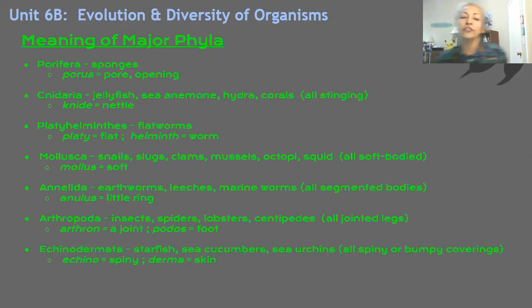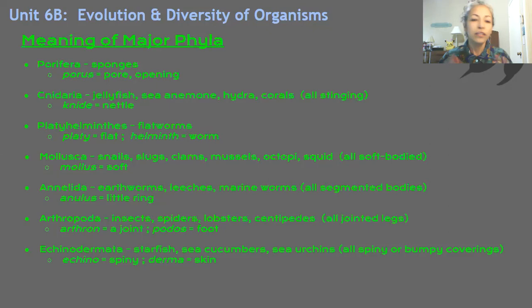How about Echinodermata? These are starfish, sea cucumbers, and sea urchins. All of these creatures have spiny or bumpy outer coverings. Echinodermata: 'echino' means spiny, and 'derma' is skin. Spiny skin — these are spiny-skinned creatures.